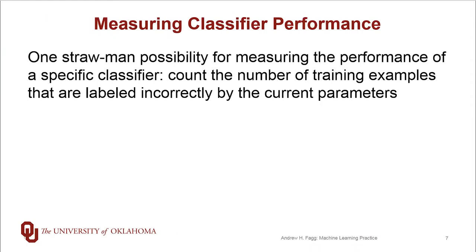So one straw man possibility is that for a given set of parameters, we draw that line in, and we run through all of the training examples, and we count the number of training examples that are labeled incorrectly. So we'll just call that error, and what we fundamentally want is a situation where we can pick a line where error is equal to 0.